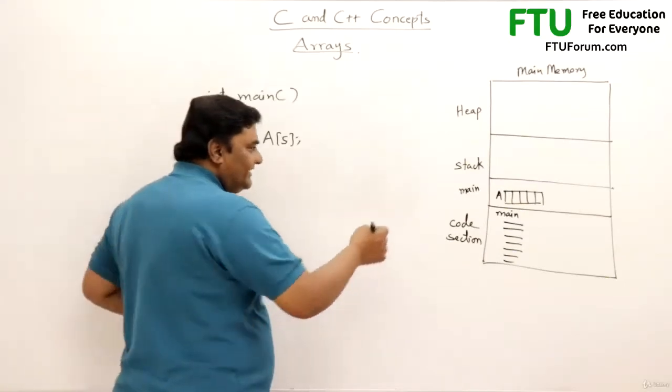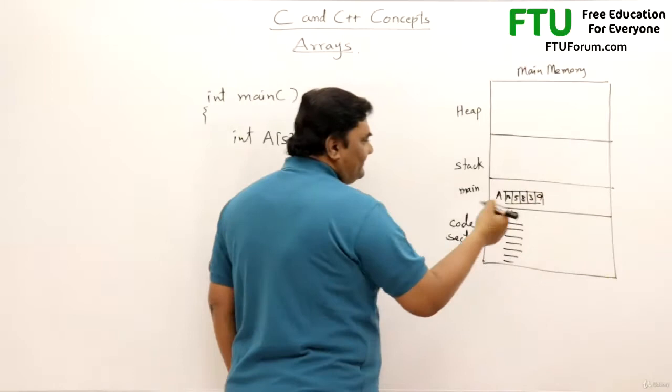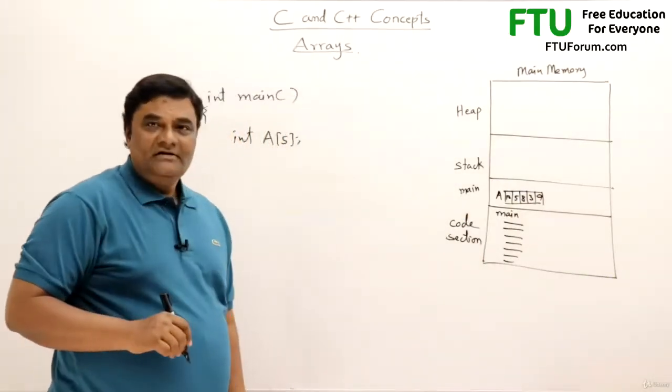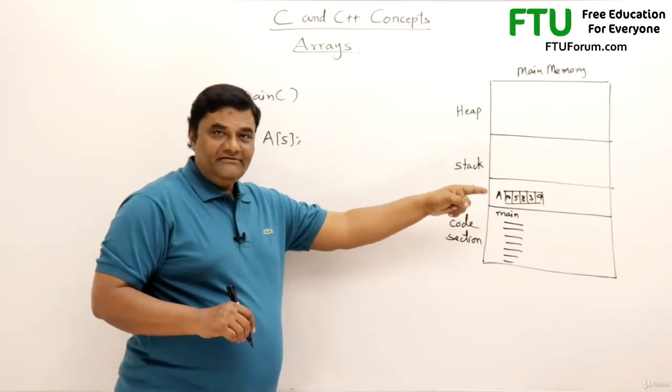And directly I can store the values, like I can store some values 10, 5, 8, 3, 9. This is how I can declare an array and where the array will be created in the memory I have shown you.